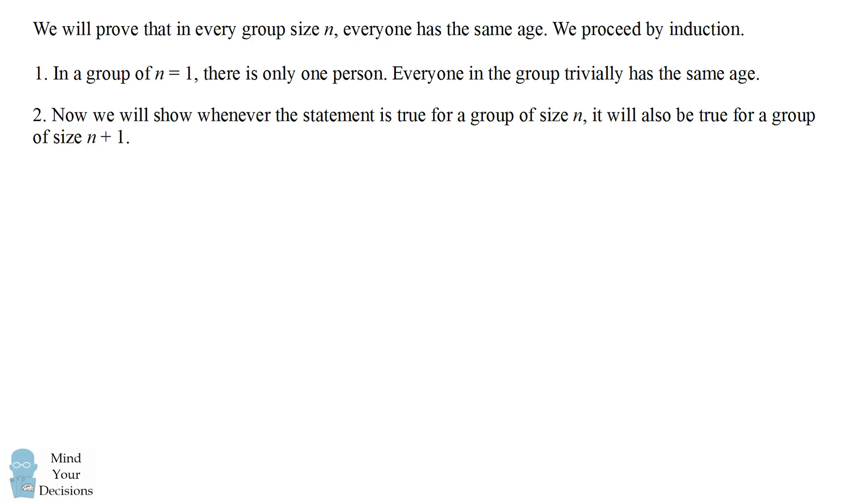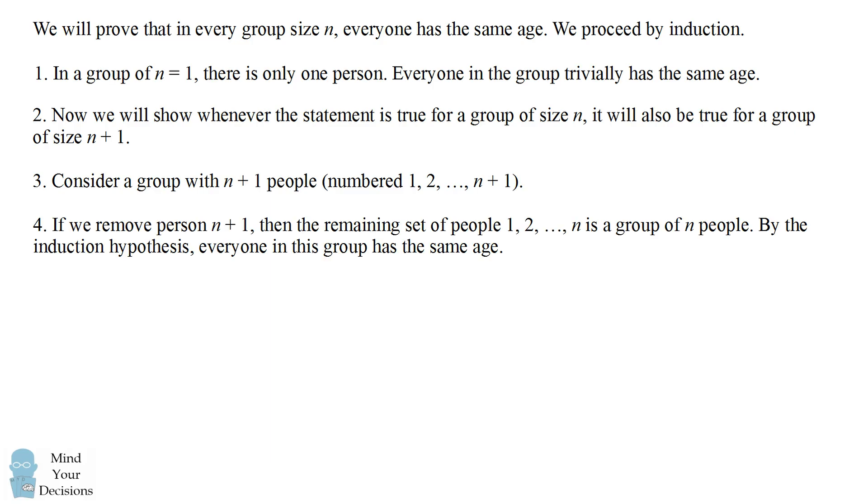Now we will show whenever the statement is true for a group of size n, it will also be true for a group of size n plus 1. Consider a group with n plus 1 people that we will number from 1 to n plus 1. If we remove person n plus 1 from the group, then the remaining set of people from 1 to n is a group of n people. By the induction hypothesis, everyone in this group has the same age.